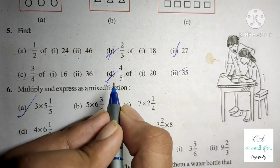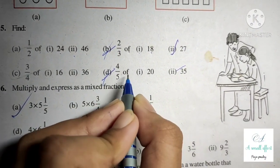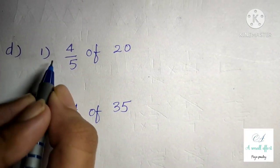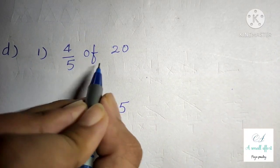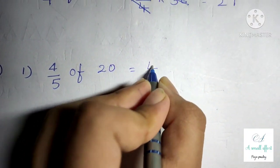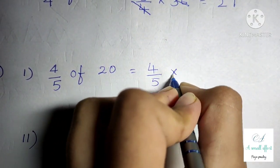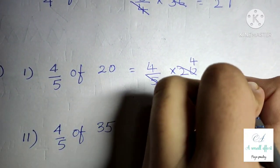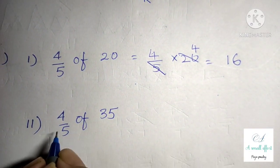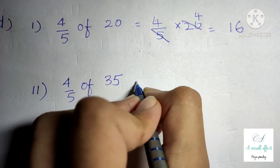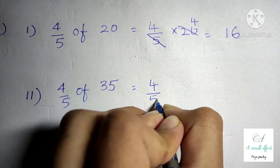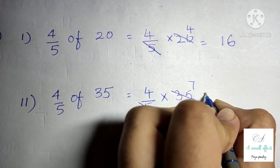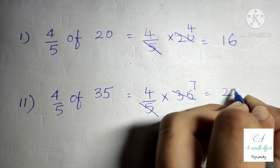Question number 5 bit D: part 1 is 4 by 5 of 20, part 2 is 4 by 5 of 35. First part: we write 4 by 5 into 20. In the 5 times table, 20 comes 4 times, so 4 fours are 16. Part 2 is 4 by 5 of 35. We write this as 4 by 5 into 35. In the 5 times table, 35 comes 7 times, so 7 fours are 28.